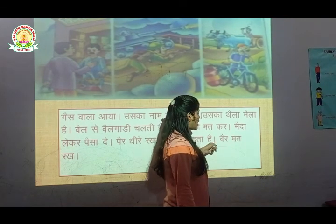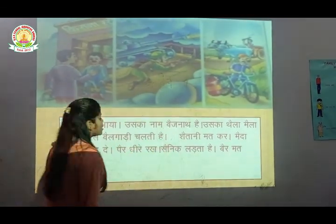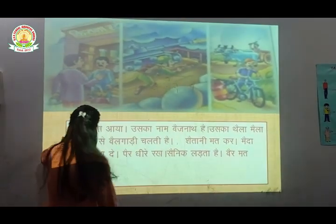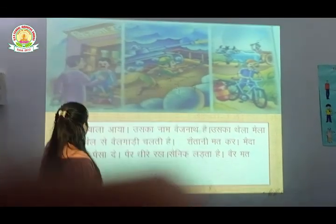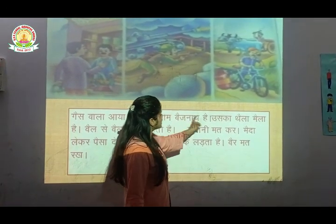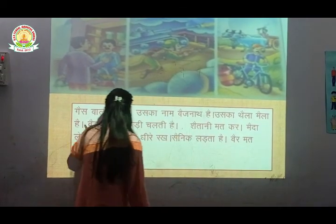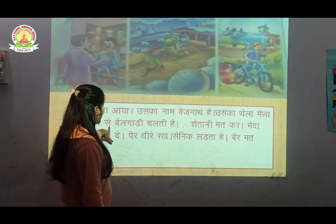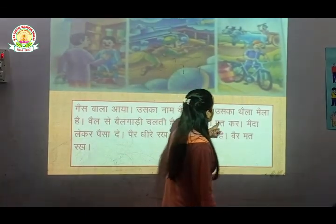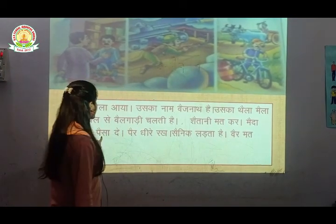फिर से हम इसको एक बार पढ़ाते हैं कि कैसे पढ़ेंगे — गैस वाला आया, उसका नाम वैजनात है, उसका थैला मैला है, बैल से बैल गाड़ी चलती है, सैतानी मत कर, मैदा लेकर पैसा दे।